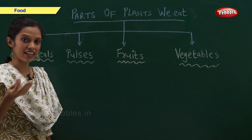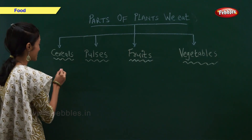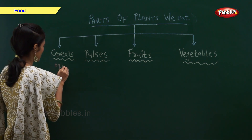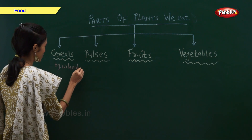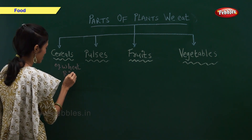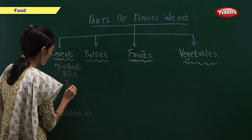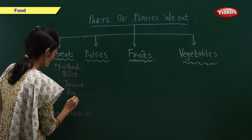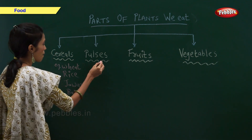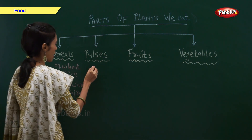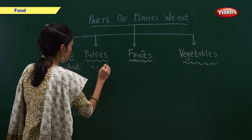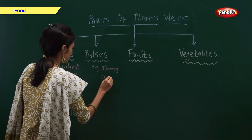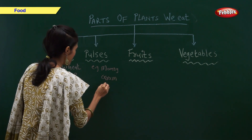Now let us see their examples. Cereals — examples of cereals are wheat, rice, jowar, and bajra. Pulses — examples of pulses are moong, gram, and chana dal.